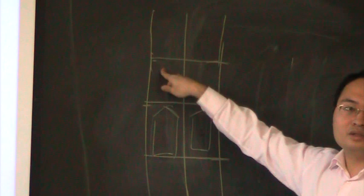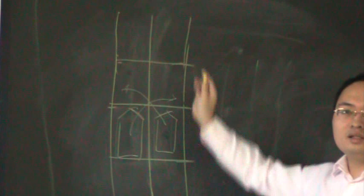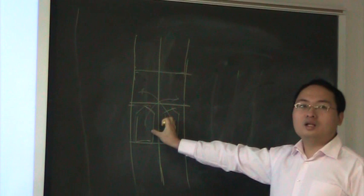Imagine a scenario where one vehicle wants to change left and another vehicle wants to change right — they both want to move to each other's position. The vehicles are traveling at the same speed. In this case, the two vehicles will form a gridlock.